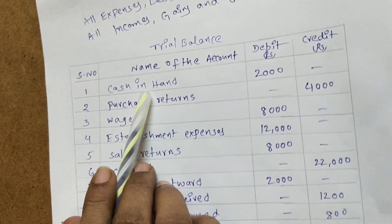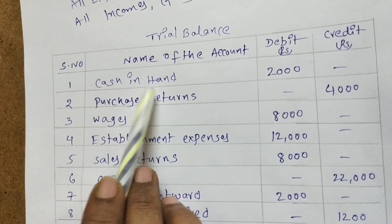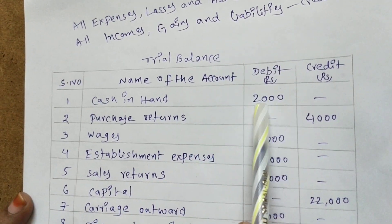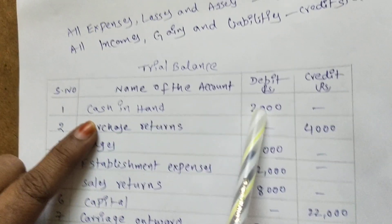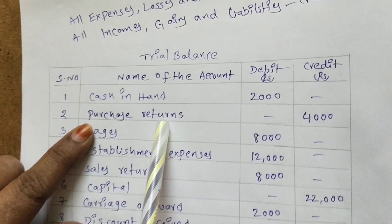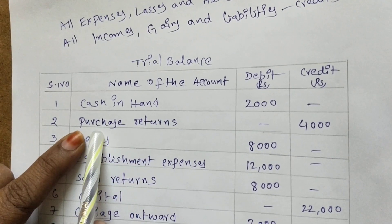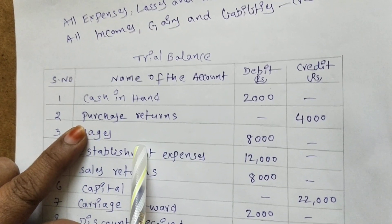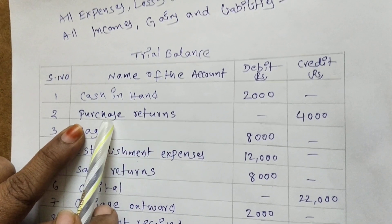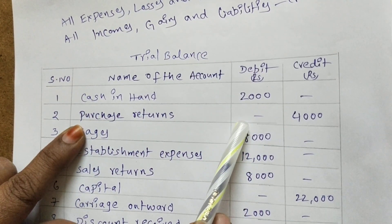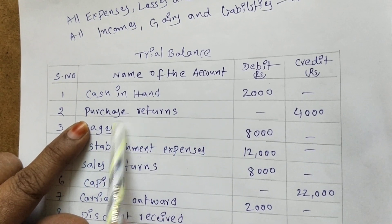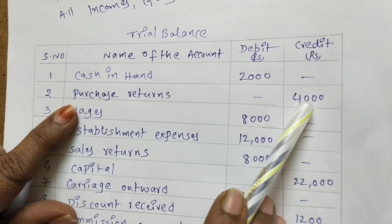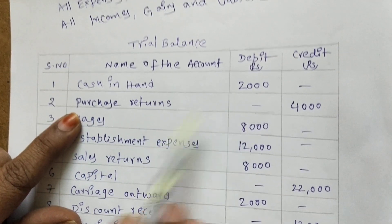First one: cash in hand — cash in hand is an asset, and all assets we have to write on the debit side. Next, purchases — purchases are expenditure, so we write them on the debit side. But purchase returns is the cancellation of purchases, so we have to write it on the opposite side — the credit side. Purchase: debit side. Purchase returns: credit side.